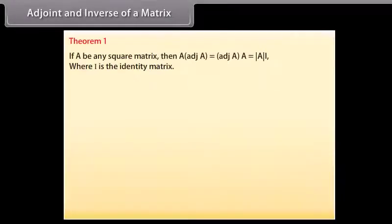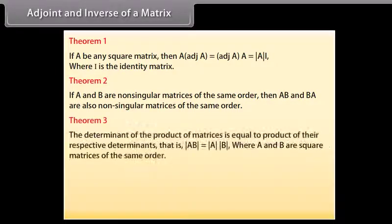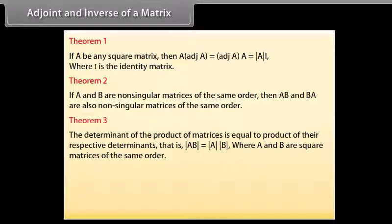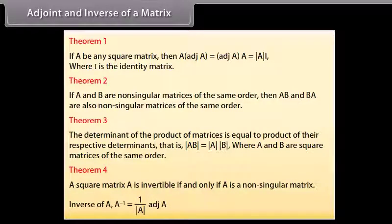Adjoint and inverse of a matrix. Theorem 1: If A is any square matrix, then A × adj(A) = adj(A) × A = det(A) × I, where I is the identity matrix. Theorem 2: If A and B are non-singular matrices of the same order, then AB and BA are also non-singular matrices of the same order. Theorem 3: det(AB) = det(A) × det(B) for square matrices of the same order. Theorem 4: A square matrix A is invertible if and only if A is non-singular. Inverse of A = (1/det(A)) × adj(A).